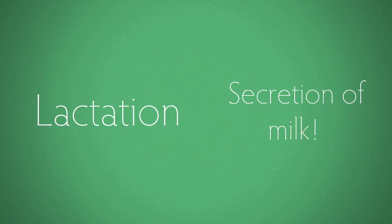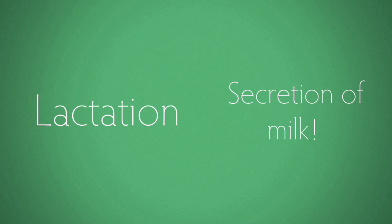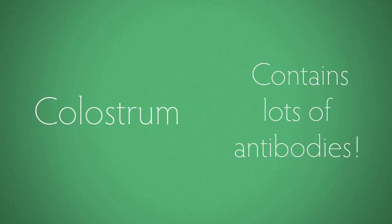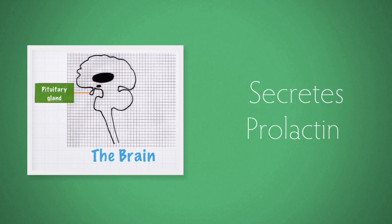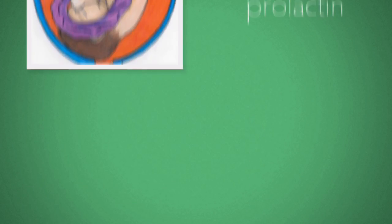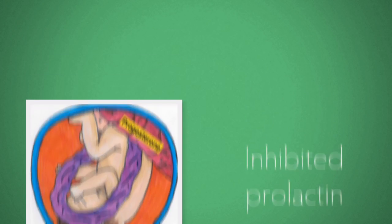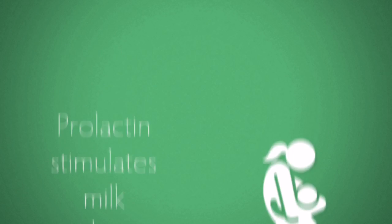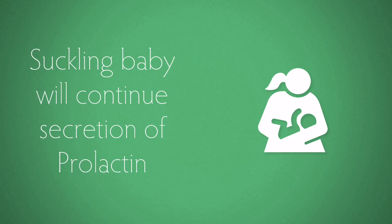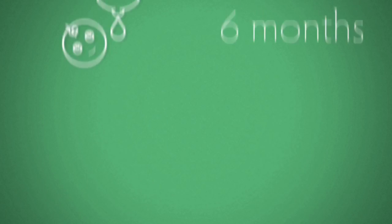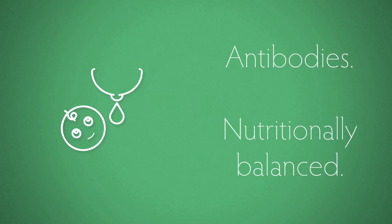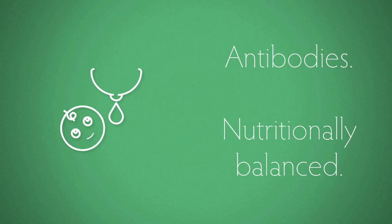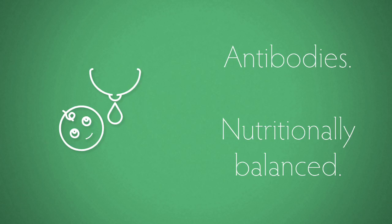After birth we move on to lactation, which is the secretion of milk from mammary glands. The mother will produce colostrum until her milk is ready. Milk production depends on the hormone prolactin, produced by the pituitary gland. During pregnancy, progesterone inhibited prolactin. As long as the baby suckles, prolactin secretion and therefore milk production will continue. It is recommended that a baby should be breastfed for at least the first six months of life because breast milk is nutritionally balanced, is a source of antibodies to help the baby fight infection, and is at the right temperature.